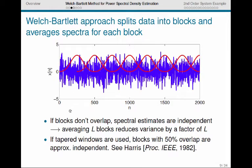We know that if the blocks don't overlap, then the spectral estimate for each block is independent, and averaging L blocks will reduce the variance of that estimate by a factor of L. The Harris paper from Proceedings of the IEEE in 1982 says that if we're using tapered windows, such as the Blackman window, and we do 50% overlap, we will still get approximately independent spectra, so that the variance will still be reduced by approximately a factor of L if we average L blocks.